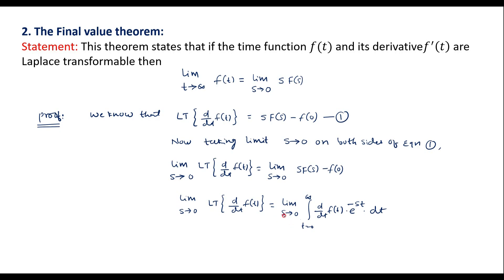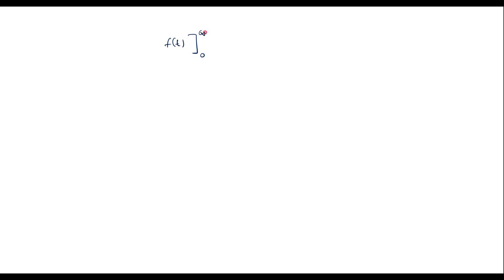As s tends to 0, e^{-st} becomes e^0, which equals 1. Therefore, the LHS simplifies to the integral from 0 to infinity of df(t)/dt dt. We can observe that the integration and differentiation cancel each other, so this becomes f(t) evaluated from 0 to infinity.